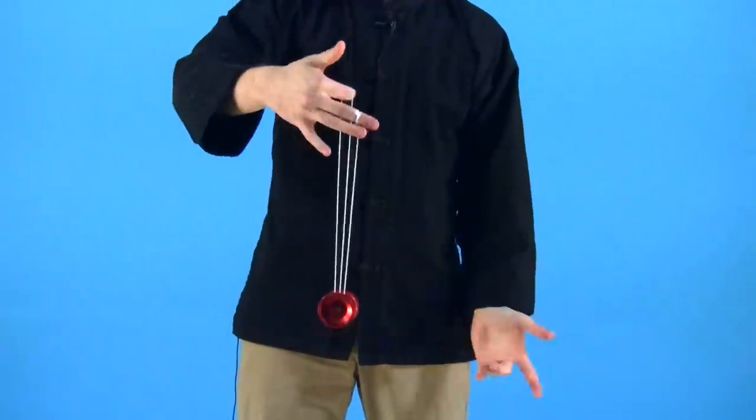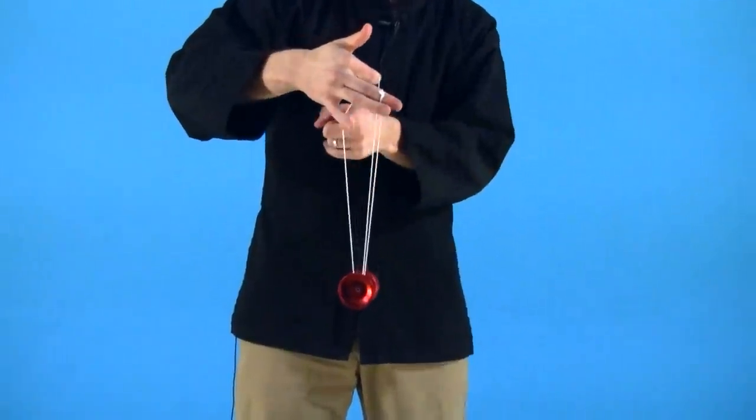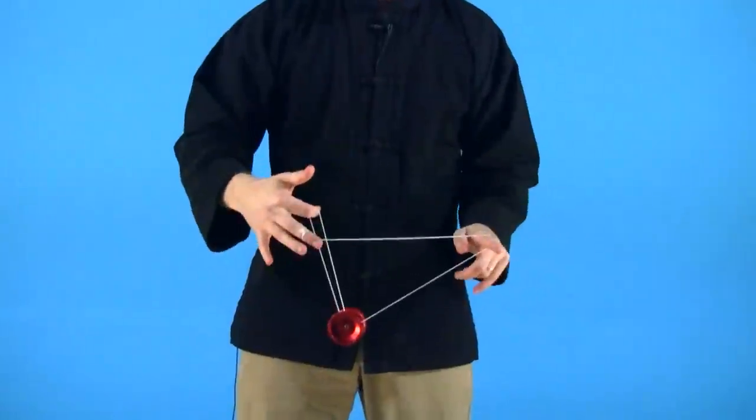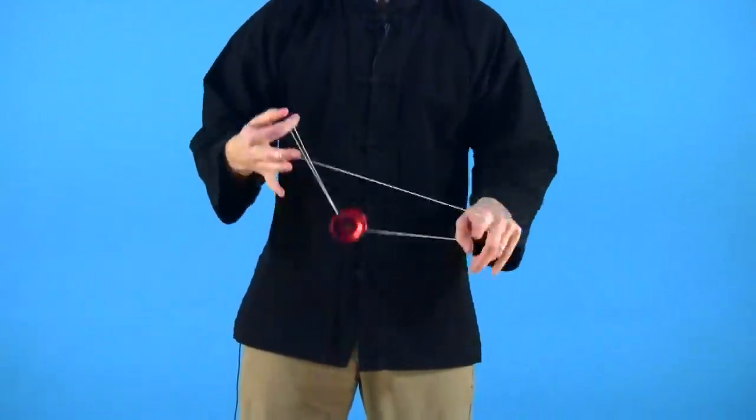So you're just in configuration like this, and you take your opposite hand's index finger, place it on this back string, do one underpass, and then you're going to hop forward onto the front string.